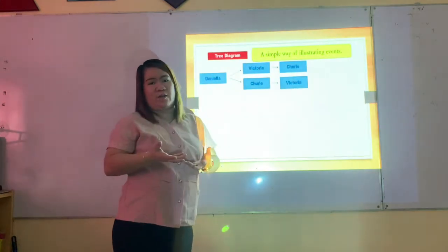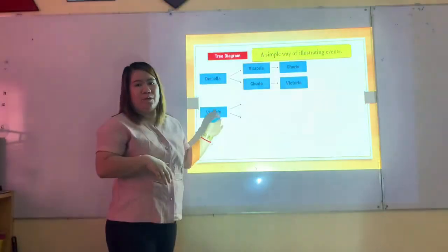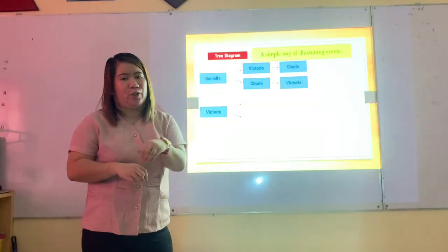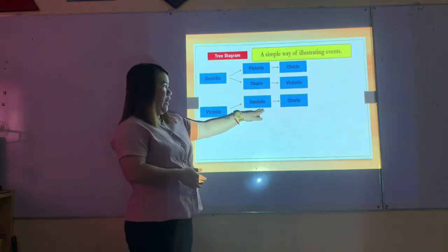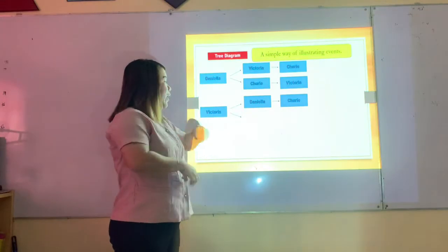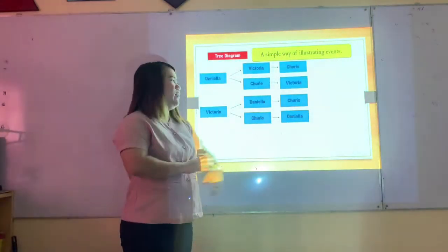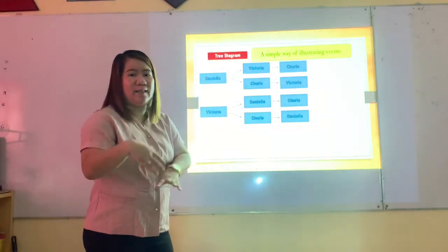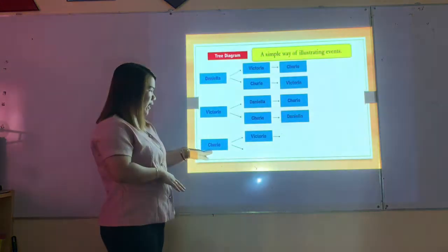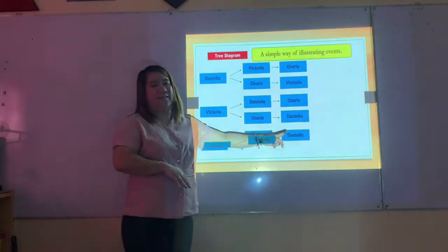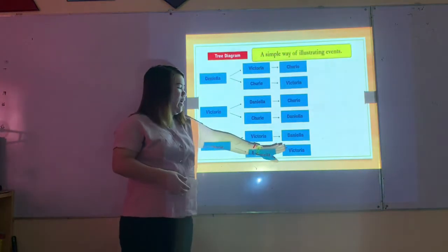If Victoria occupies the first position, we can have Victoria-Daniela-Charlie or Victoria-Charlie-Daniela. If Charlie occupies the first position, we can have Charlie-Victoria-Daniela or Charlie-Daniela-Victoria.